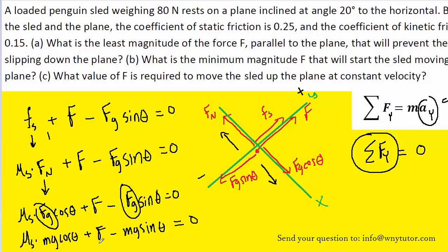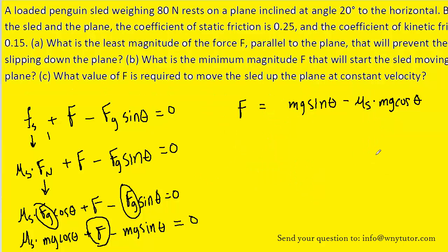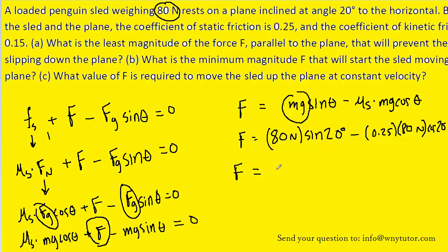And then if we solve this equation for the force F that we're looking for, we obtain... And then we substitute in the known values for mass, gravitational constant, the angle of incline, and also the coefficient of static friction. Note that mg was given to us in the question already in the form of 80 newtons. And so the force in part A is equal to 8.6 newtons.